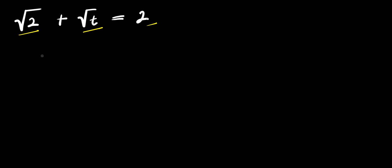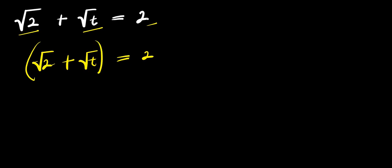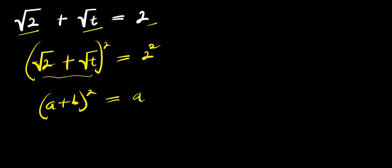We can just recopy this problem: we have root 2 plus root t and this equals 2. I can decide to take the squares of both parts of this equation. This is in the form of a plus b raised to the power of 2, which equals a squared plus 2ab plus b squared. In this case, square root of 2 is a and root of t is b.